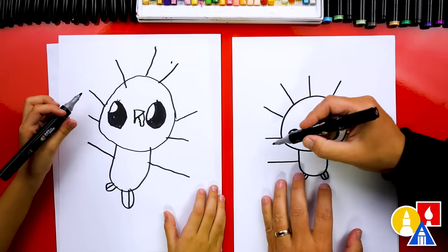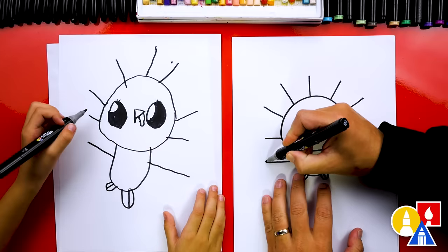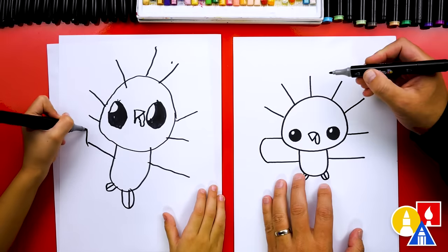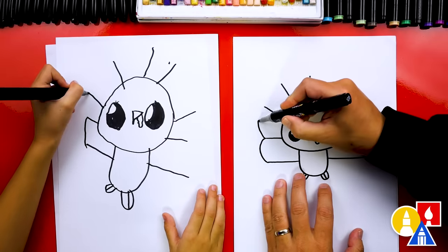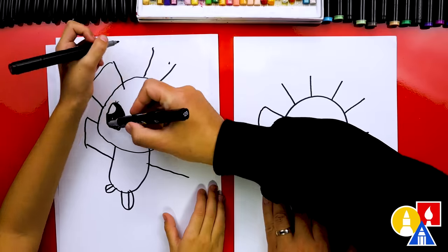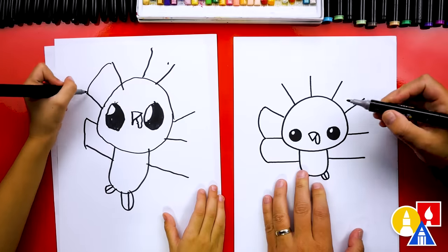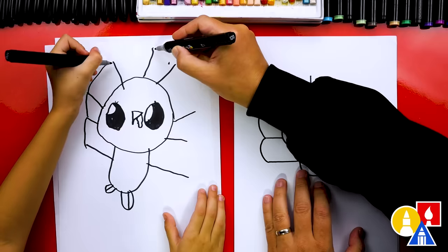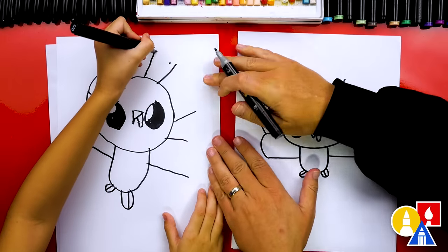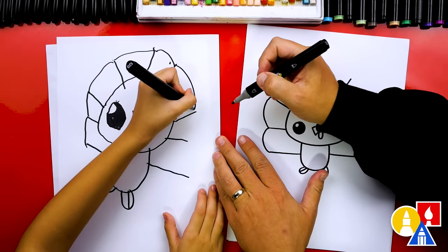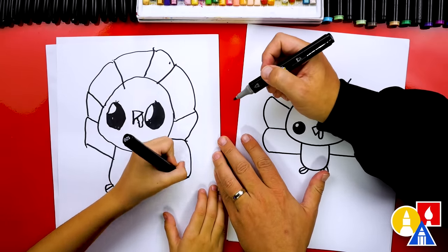Now we're going to connect all of these lines together with bumps. We're going to draw a little bump like that to connect. Then we can draw another bump to connect here, and also connect in between here. Then we're going to connect there all the way till we get down here. Keep going. You did it.